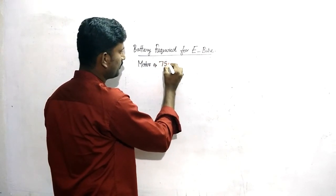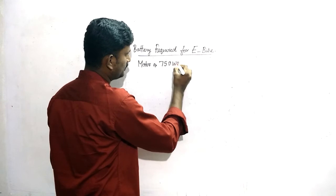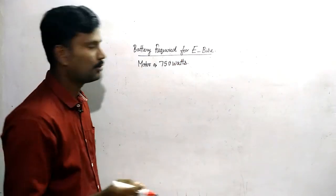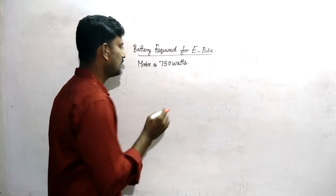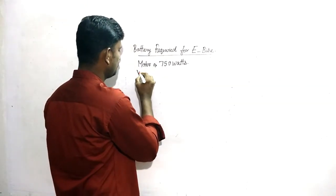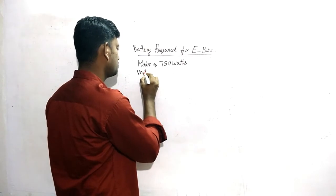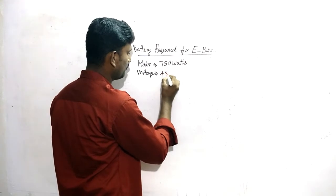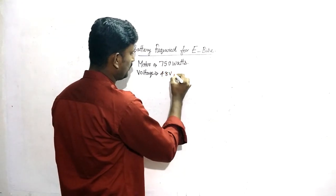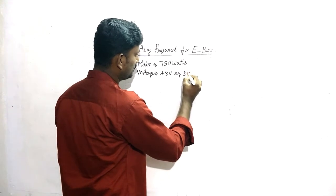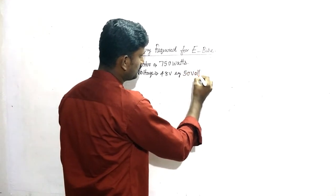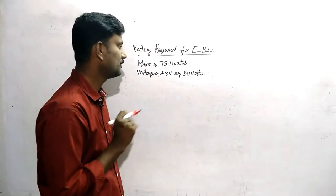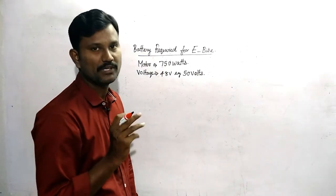So, some 500-watt motor — let's see how much battery is required. 48 volt, for example 50 volts. This is the voltage that we mentioned. This is the battery.